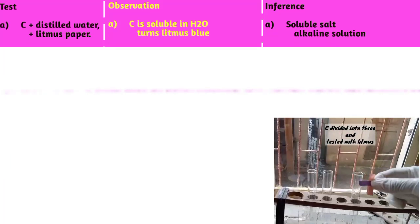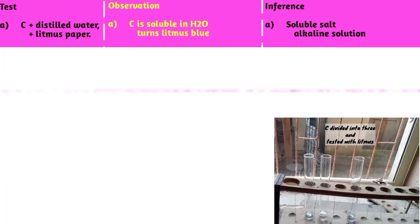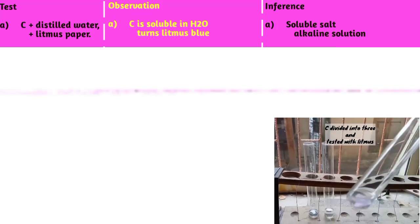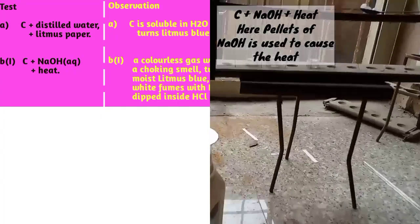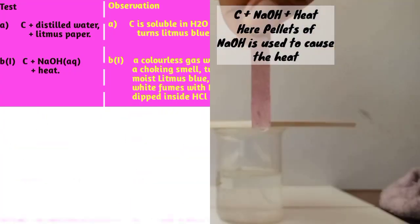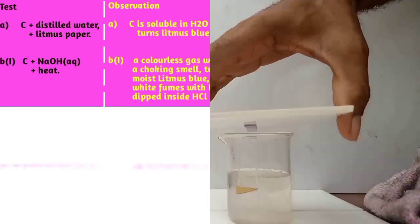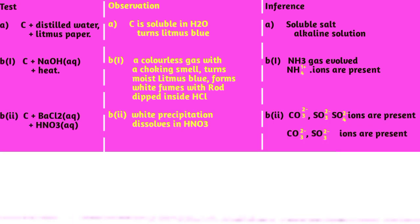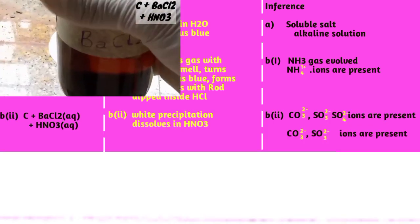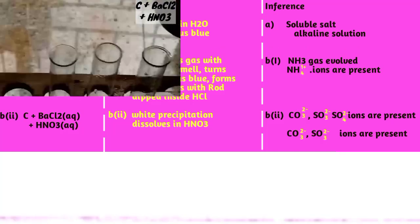Part B(i) of the question: To about 2 cm³ of C, add few drops of sodium hydroxide and heat. You will notice a gas with choking smell that turns moist litmus blue and forms white fumes if a glass rod dipped inside HCl is brought near it.